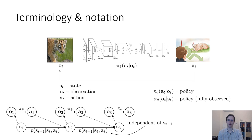Typically, you'll see me write the policy as pi_theta a_t given o_t, or pi_theta a_t given s_t, depending on whether I'm talking about the partially observed or the fully observed case. I will sometimes get a little sloppy and use s_t when in fact you could also use o_t, but in cases where this distinction is important, I'll make a remark in the lectures.